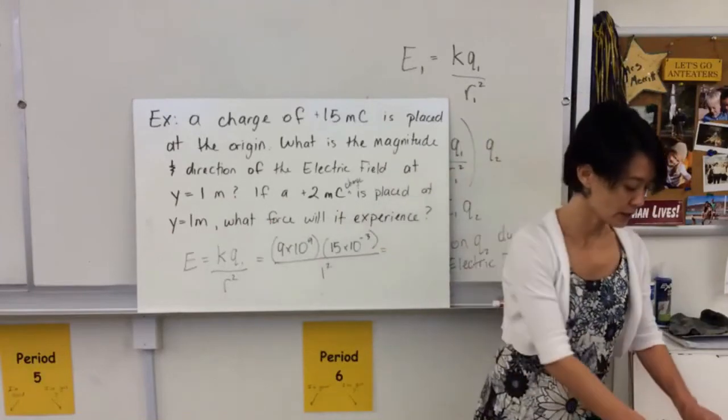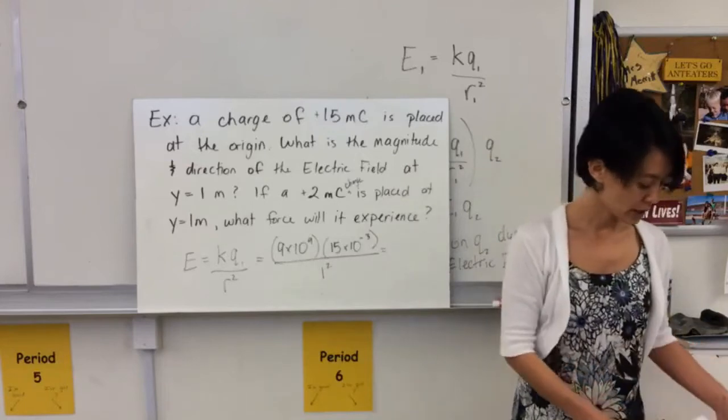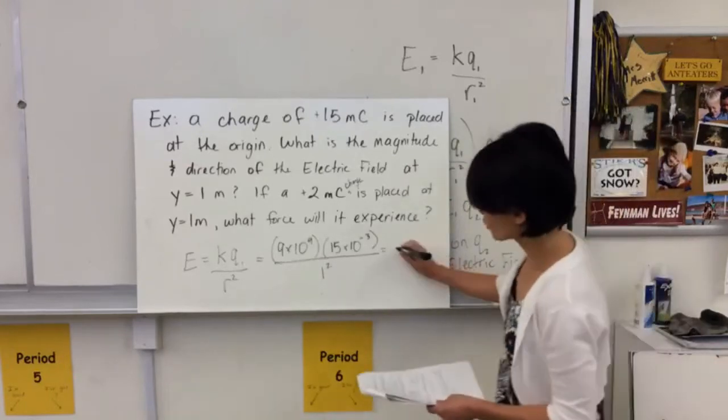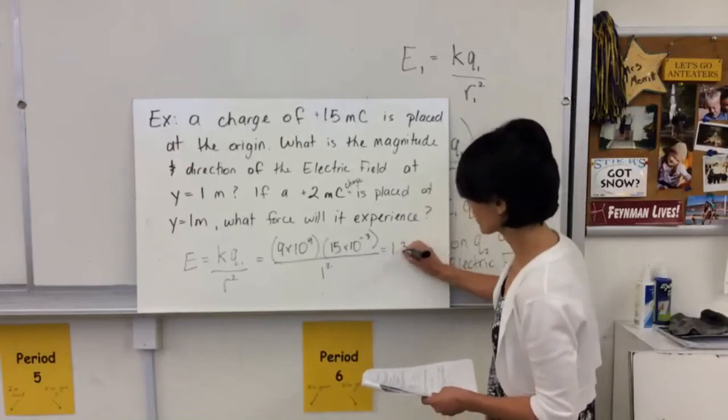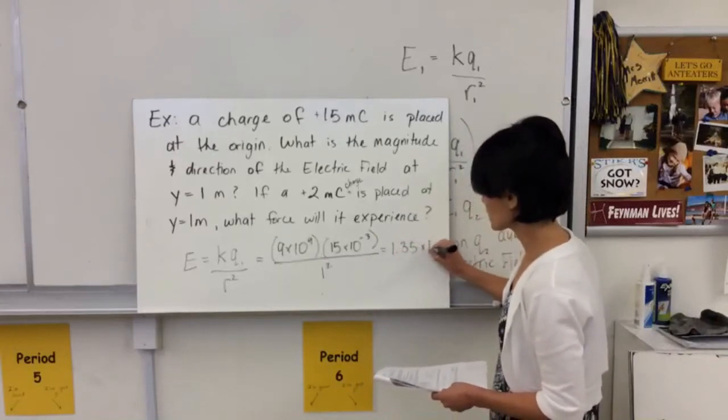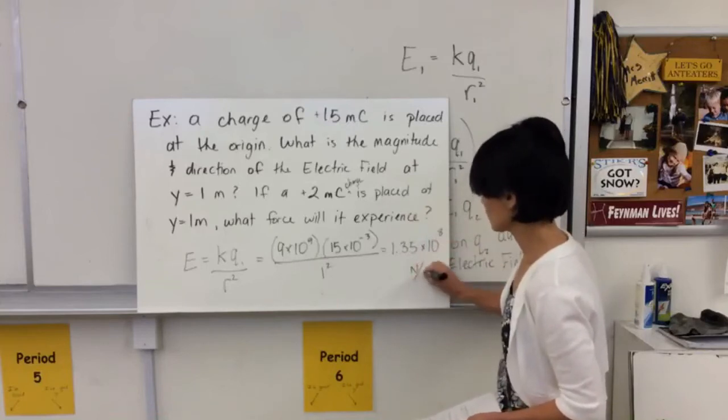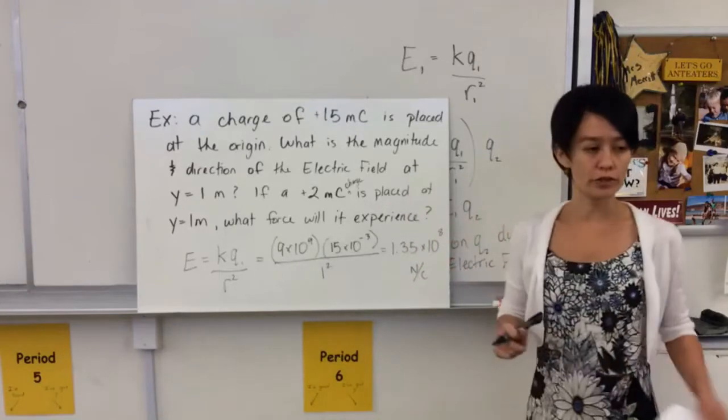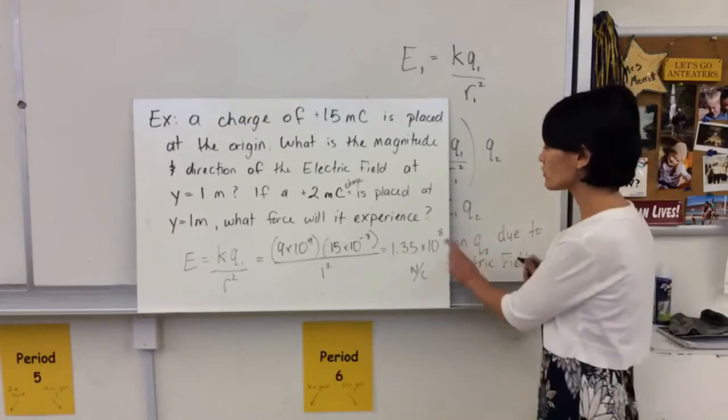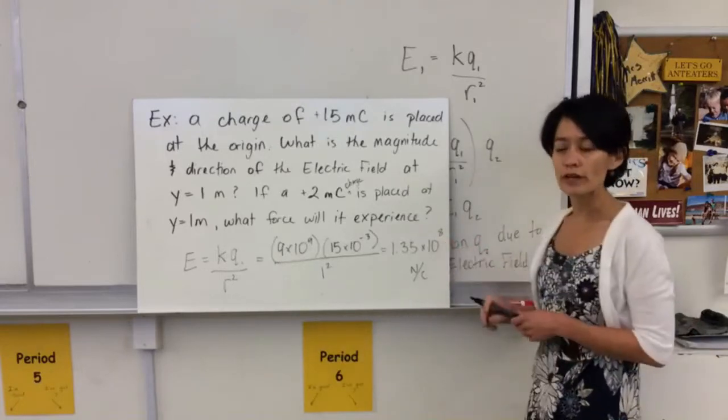And it's a really big number. You should get 1.35 times 10 to the 8 newtons per coulomb. So it's a really large electric field. And that's kind of what we're going to get. We're going to get electric field values that are pretty big.